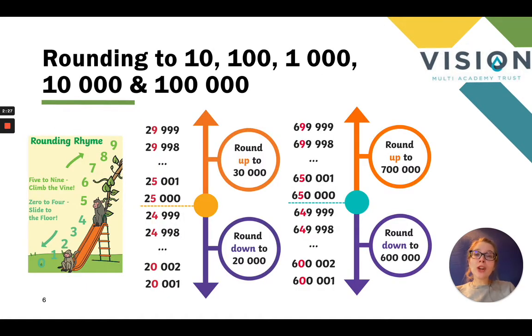So we're further rounding to 10, 100, 1,000, 10,000 and 100,000, but the principle still applies. If you are rounding up or rounding down, for example to the nearest thousand, you look at the digit that's in the place for your thousands column, look at the digits to the right. Do we round that up or do we round it down? The same rules apply.